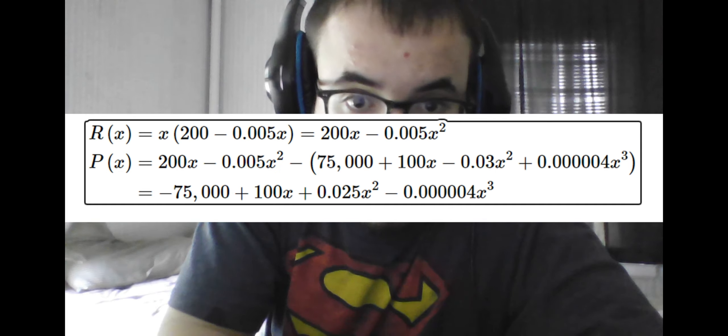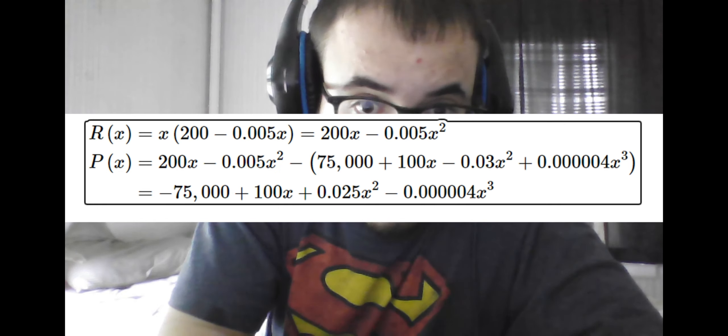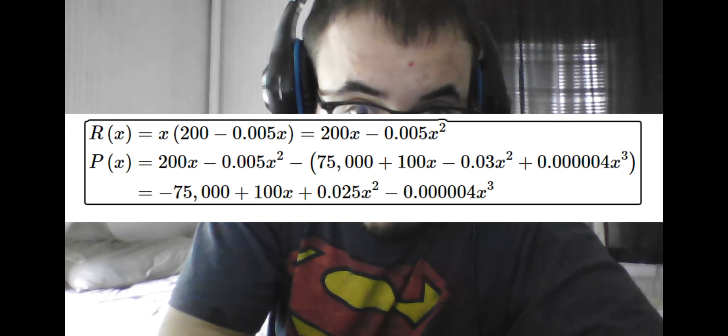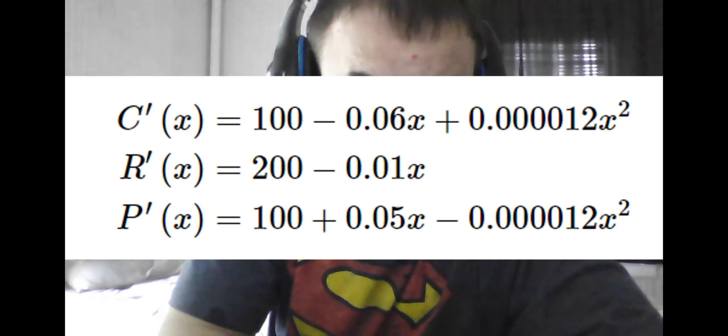We see the marginal cost is simply the derivative of a given cost function, because it is the rate of change of cost, or what the margin of the cost will be. Similarly, since we have a function for revenue in terms of x, we take the derivative of that. And lastly, we take the subtraction of these derivatives as the derivative of the profit function.